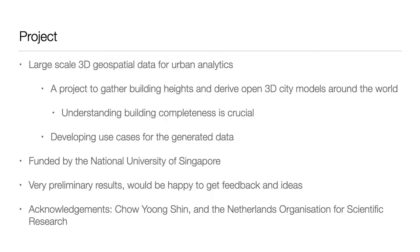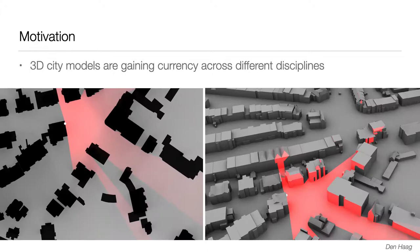Before I proceed, I would like to acknowledge my colleague Yong Shin, a new researcher in the project, and also thank the Netherlands Organization for Scientific Research for funding a previous project which this project builds on. To give some context, 3D city models are urban-scale 3D representations of the built environment, representing our 3D world more truthfully — essentially upgrading traditional 2D GIS datasets. They have been used across multiple disciplines and have enabled new spatial applications or improved existing analysis.